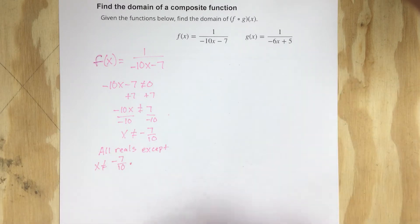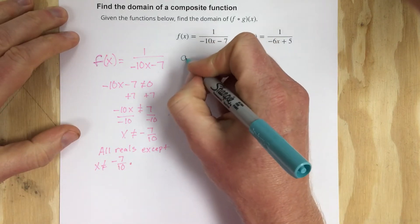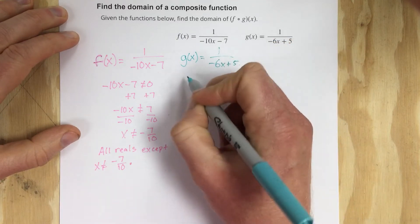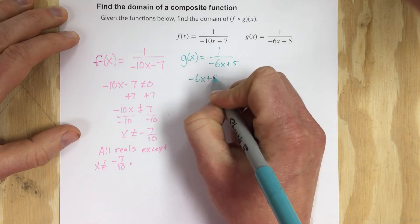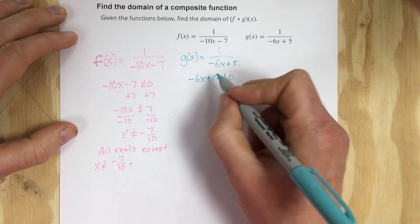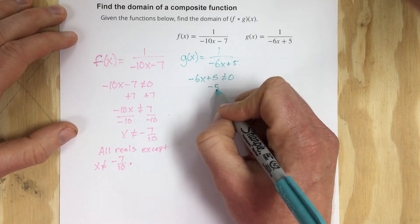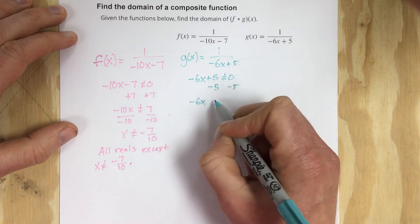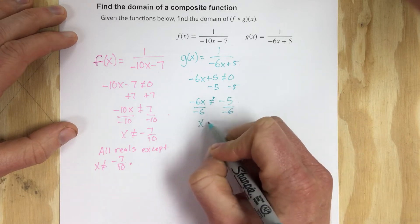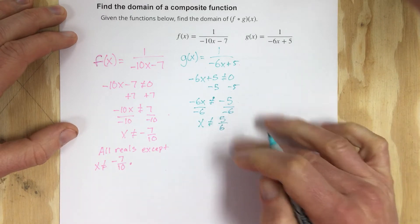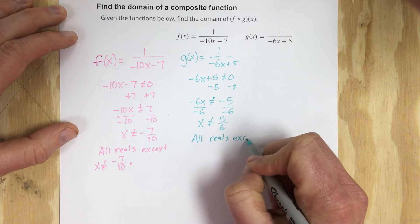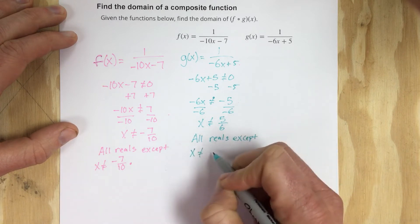For g of x, we have g of x equals 1 over negative 6x plus 5. We cannot have the denominator equal 0 — same reason as f of x, this is a rational function and we can't have division by 0. So we subtract 5: negative 6x cannot equal negative 5. Divide by negative 6, and we get x cannot equal 5 sixths. So the domain of g of x is all reals except x cannot equal 5 sixths.